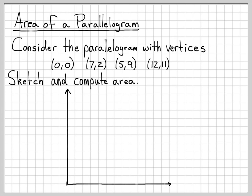So sketching it's not too bad. This is just two-dimensional. I know that I'm going to have a point or a vertex at (0,0). So there's the point (0,0). I also have a vertex at (7,2), which is this point right here. There's a vertex at (5,9), which is that point right there, and there's a vertex at (12,11), which is this point right here.